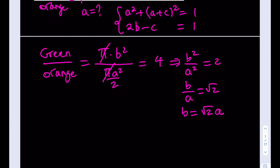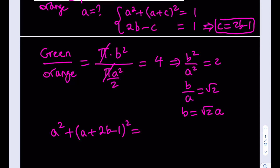What we're going to do next is just use what we have. We know that B can be expressed in terms of A. We also have the equation 2B minus C = 1, so we can replace C with 2B minus 1. Substituting into the first Pythagorean equation gives us: A squared plus (A plus 2B minus 1) quantity squared is equal to 1.